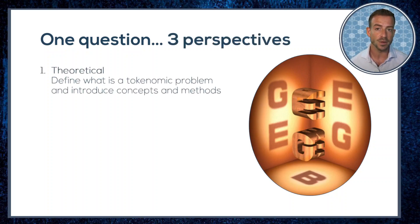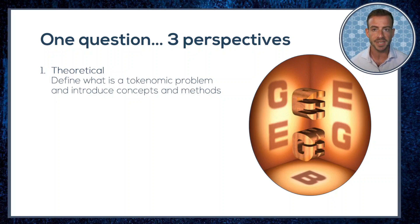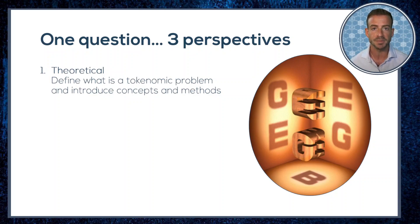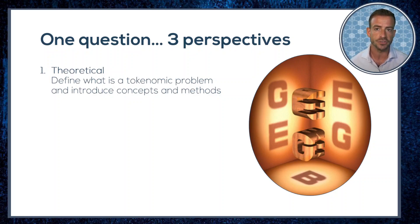The first is the theoretical perspective. This examination centers on defining what a tokenomic problem is and introduces theory and methods that help us frame these problems clearly and solve them practically, relating this to existing bodies of knowledge and theory where possible.